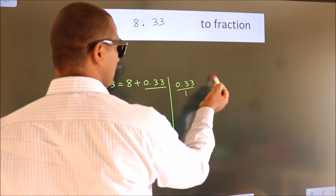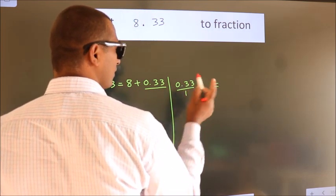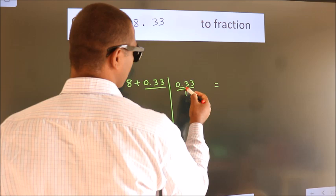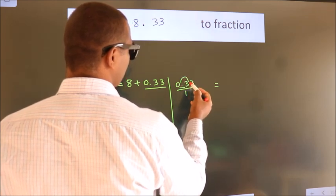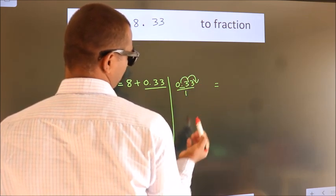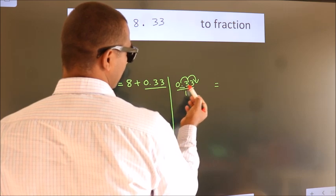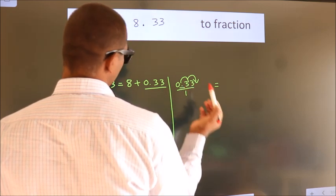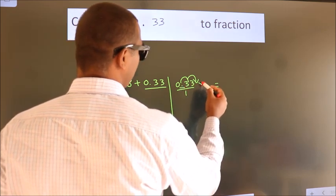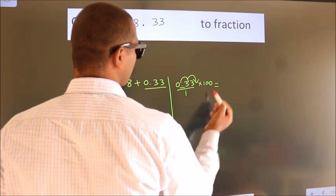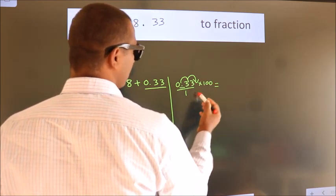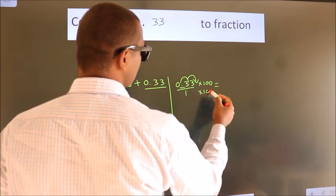To convert this to fraction, we have to move the decimal two places. For that, multiply it with 100. Whatever we are multiplying in the numerator, in the denominator also do the same.